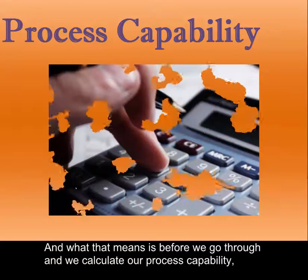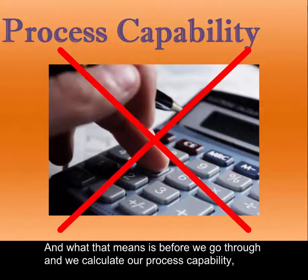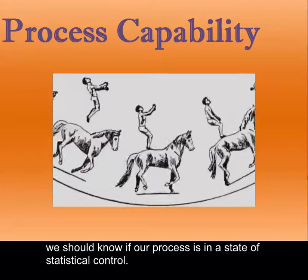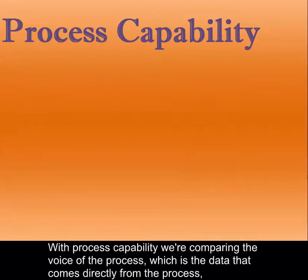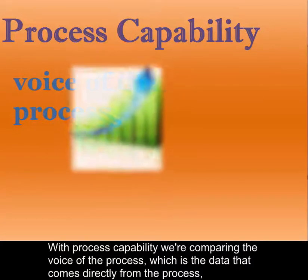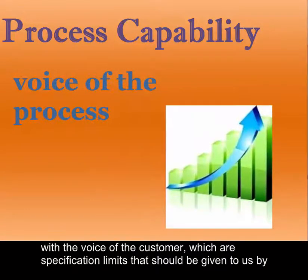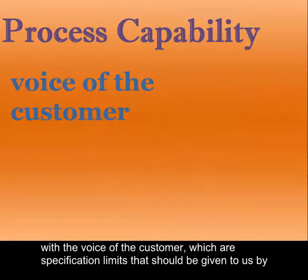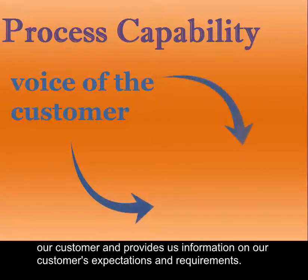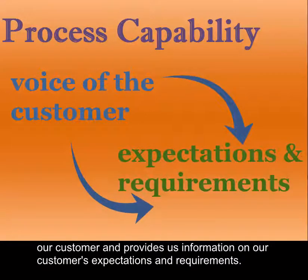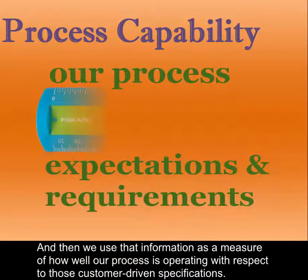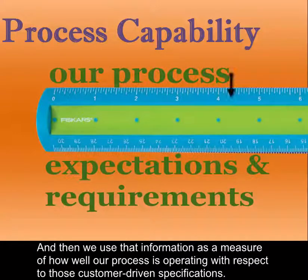Before we calculate our process capability, we should know if our process is in a state of statistical control. With process capability, we're comparing the voice of the process — which is the data that comes directly from the process — with the voice of the customer, which are our specification limits given to us by our customer and provides information on our customer's expectations and requirements. We use that information as a measure of how well our process is operating with respect to those customer-driven specifications.